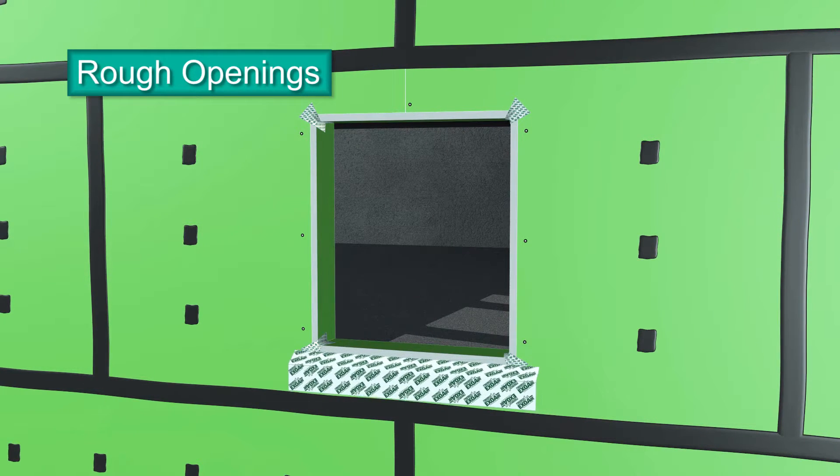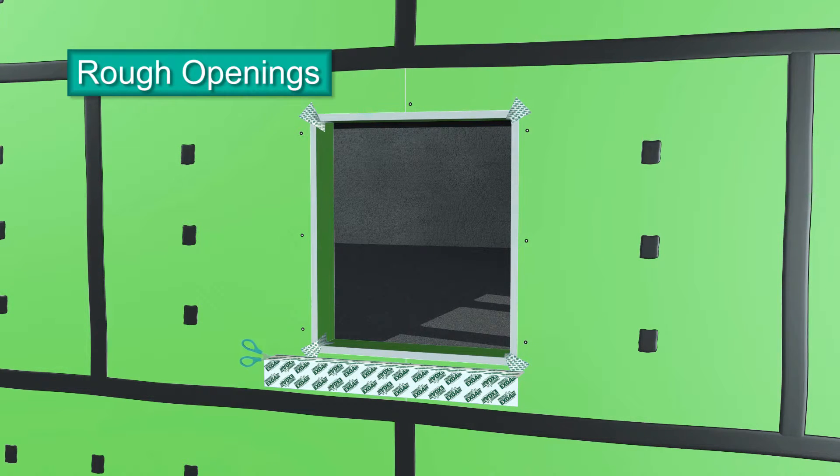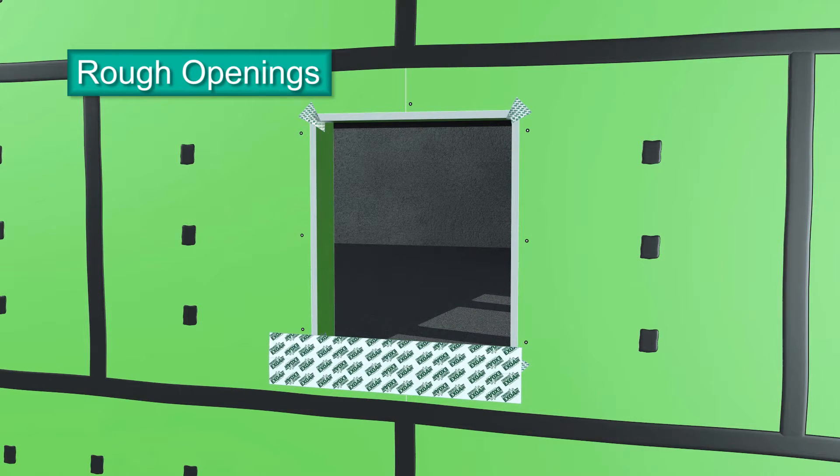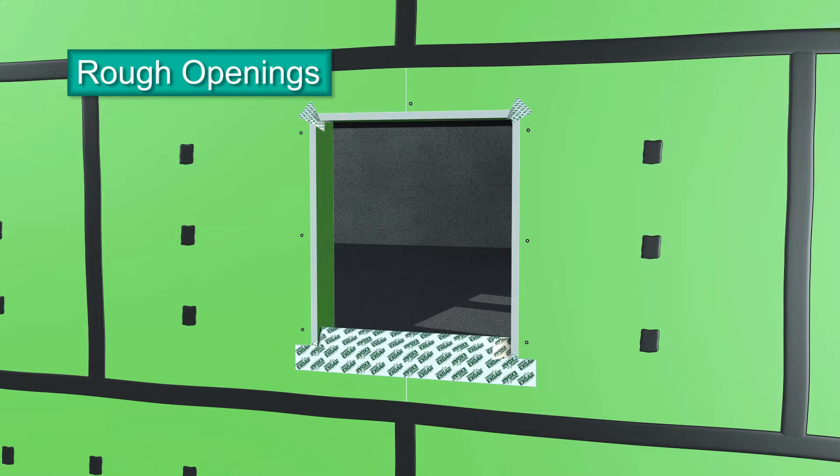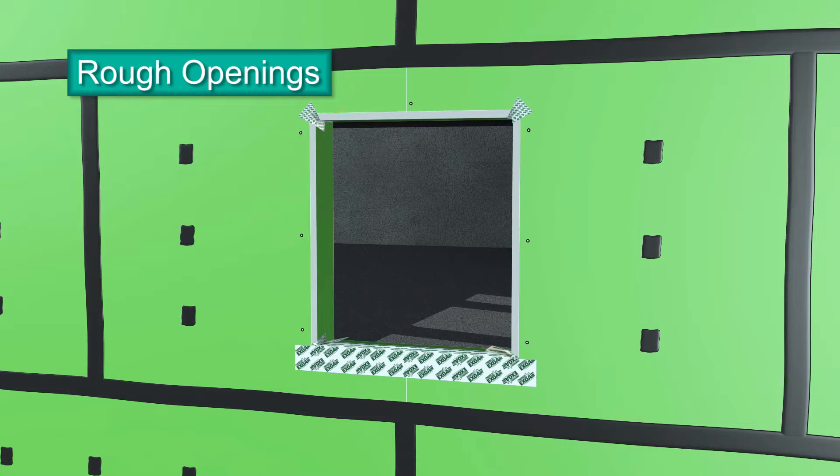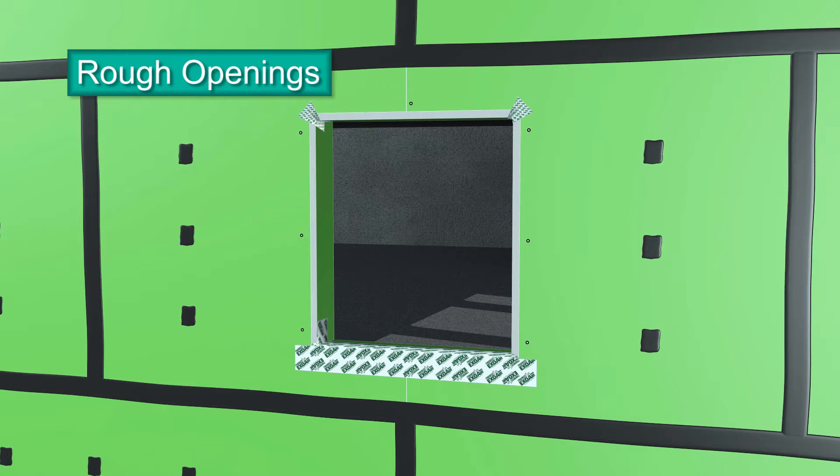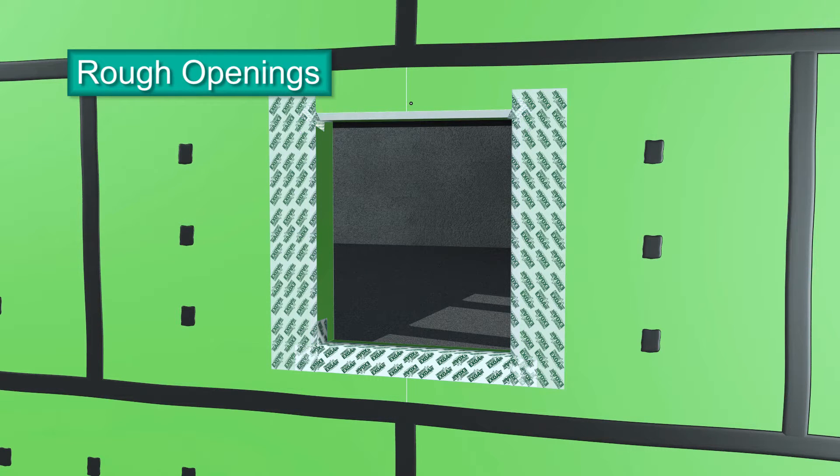Next, cut a strip of ExoAir 110 AT 6 inches longer than the sill. Fold it in half and cut a 3 inch slit on each end along the fold. Remove the release liner and position half the strip on the sill while folding down the other half onto the face of the exterior sheathing. Press the inside cut edges up onto each jamb.